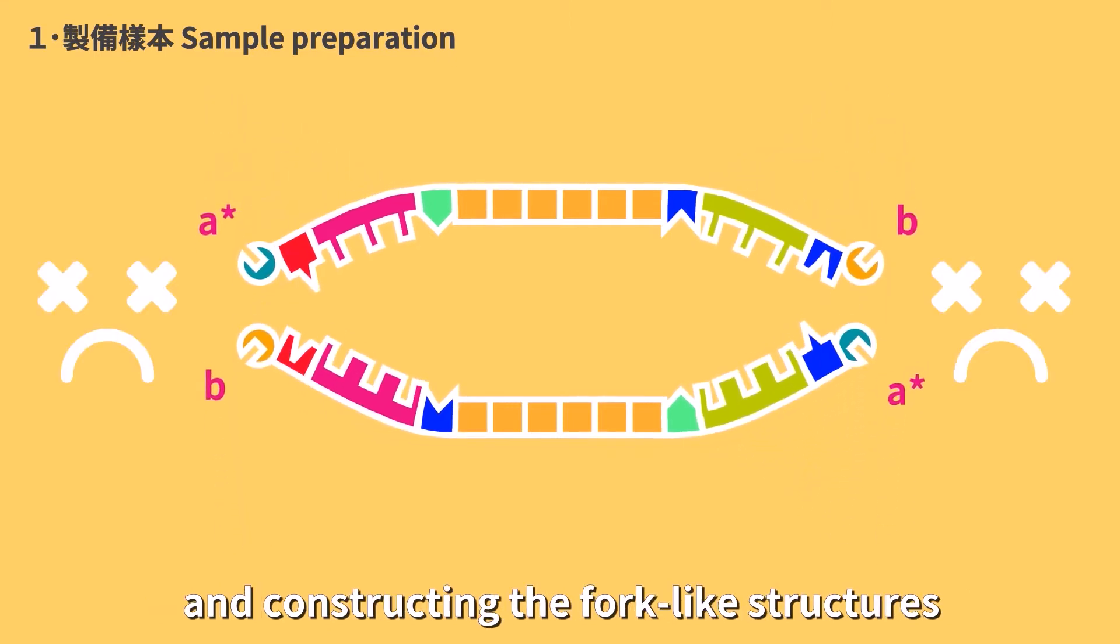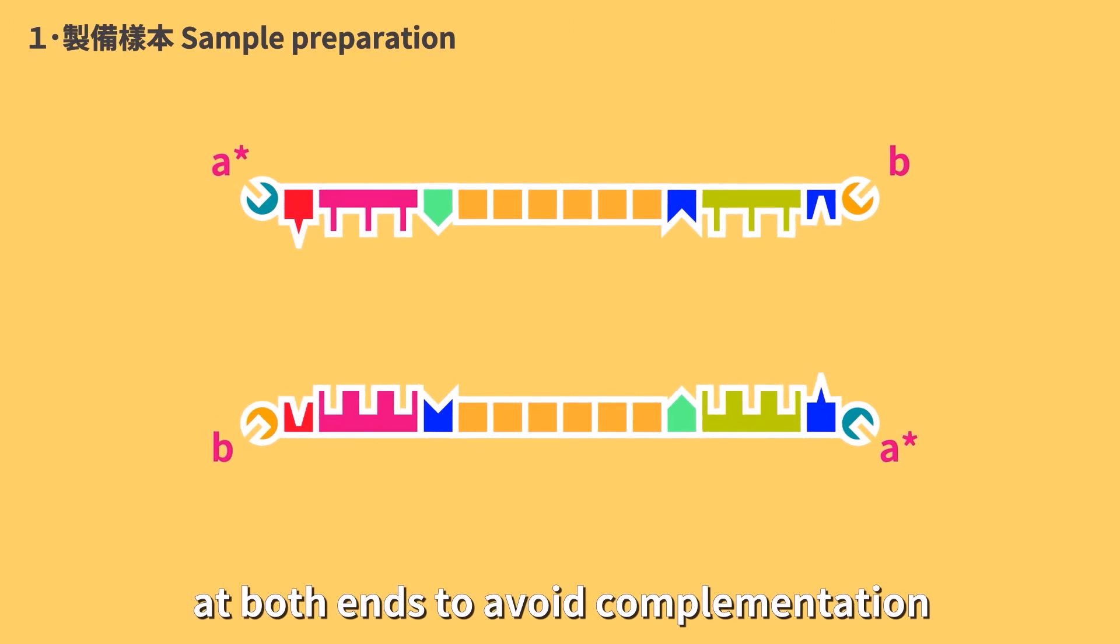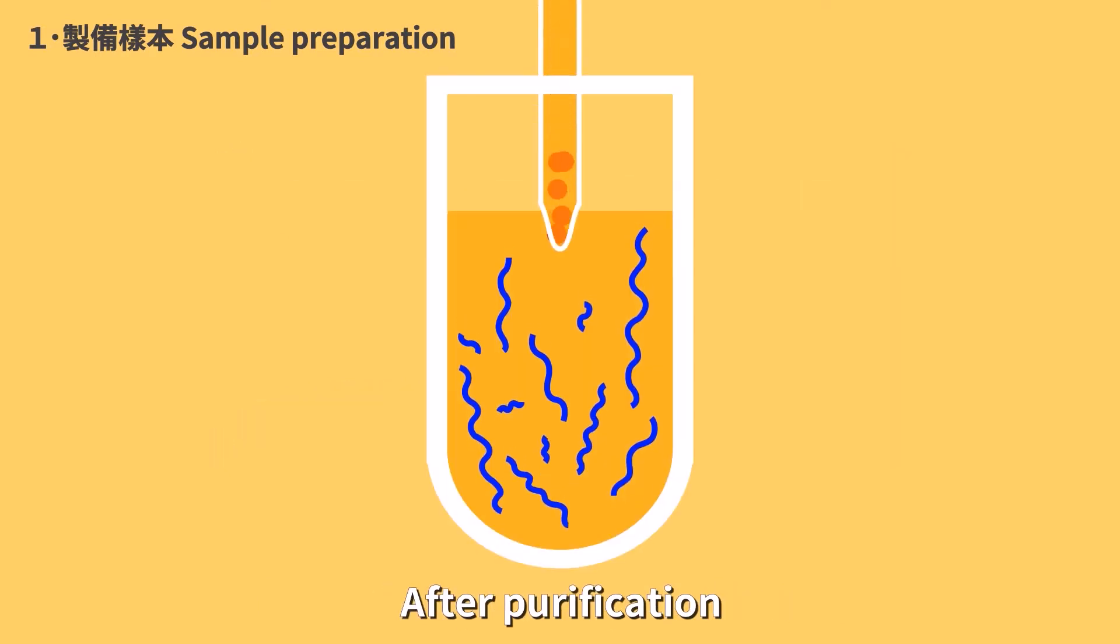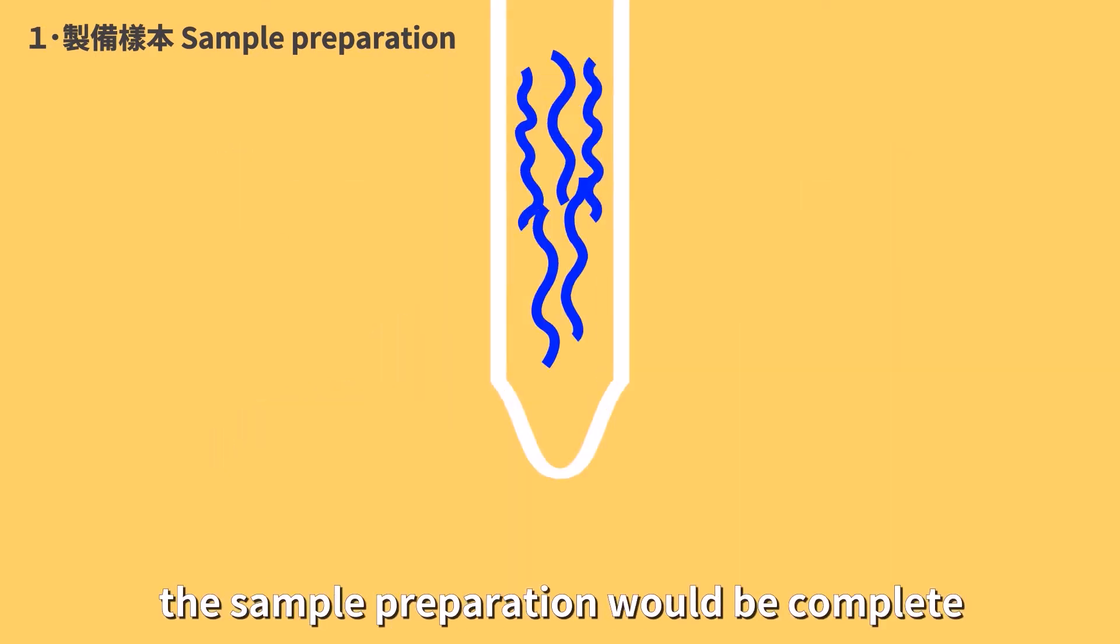and constructing fork-like structures at both ends to avoid complementation and re-ligation. It aids subsequent amplification in sequencing reactions. After purification, the sample preparation will be complete.